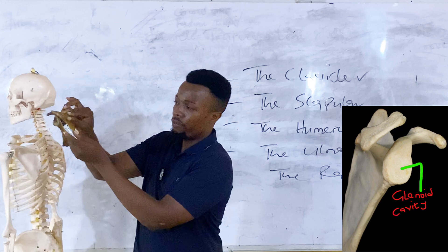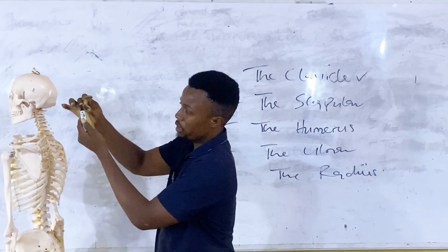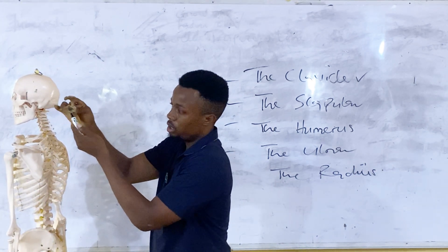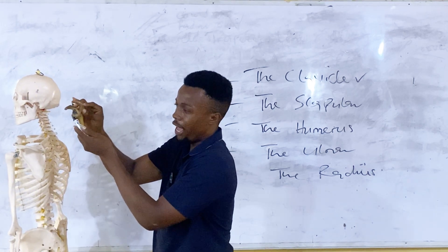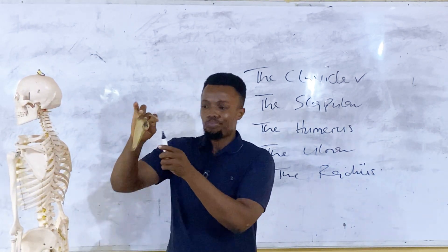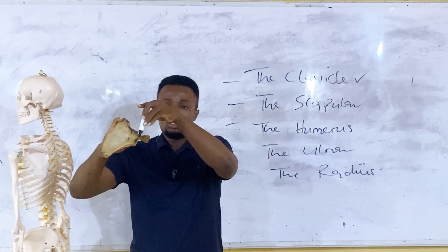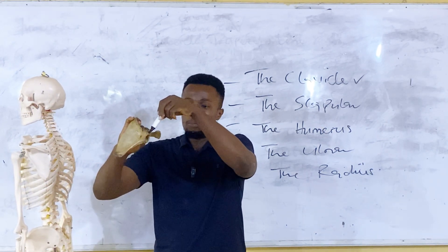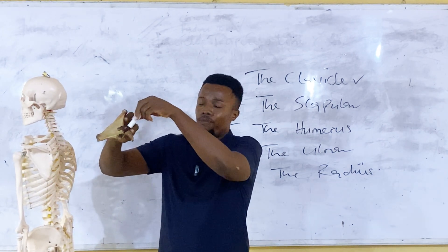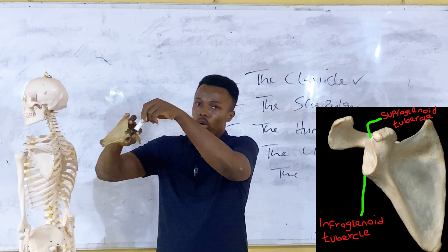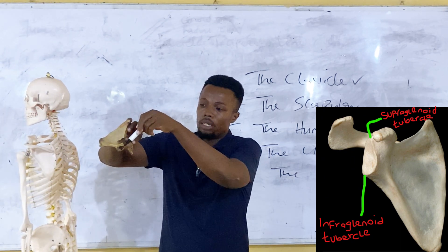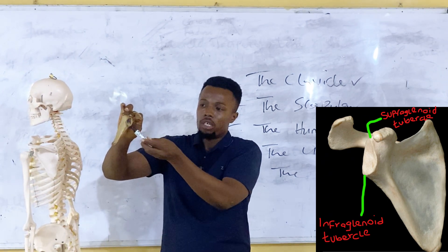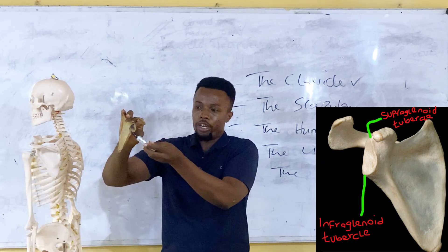Around the glenoid cavity, we have the neck of the scapular. Then, above the glenoid cavity there is a protrusion, and also below it there is a protrusion. The protrusion above the glenoid cavity is referred to as the supraglenoid tubercle, while the protrusion down here is referred to as the infraglenoid tubercle.